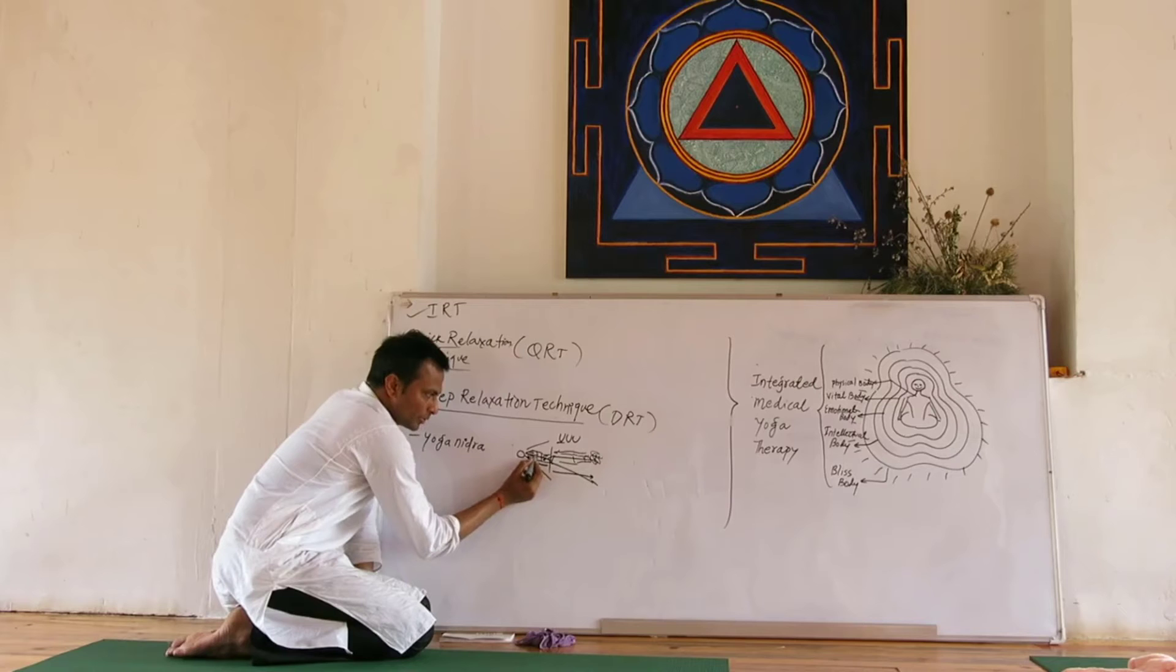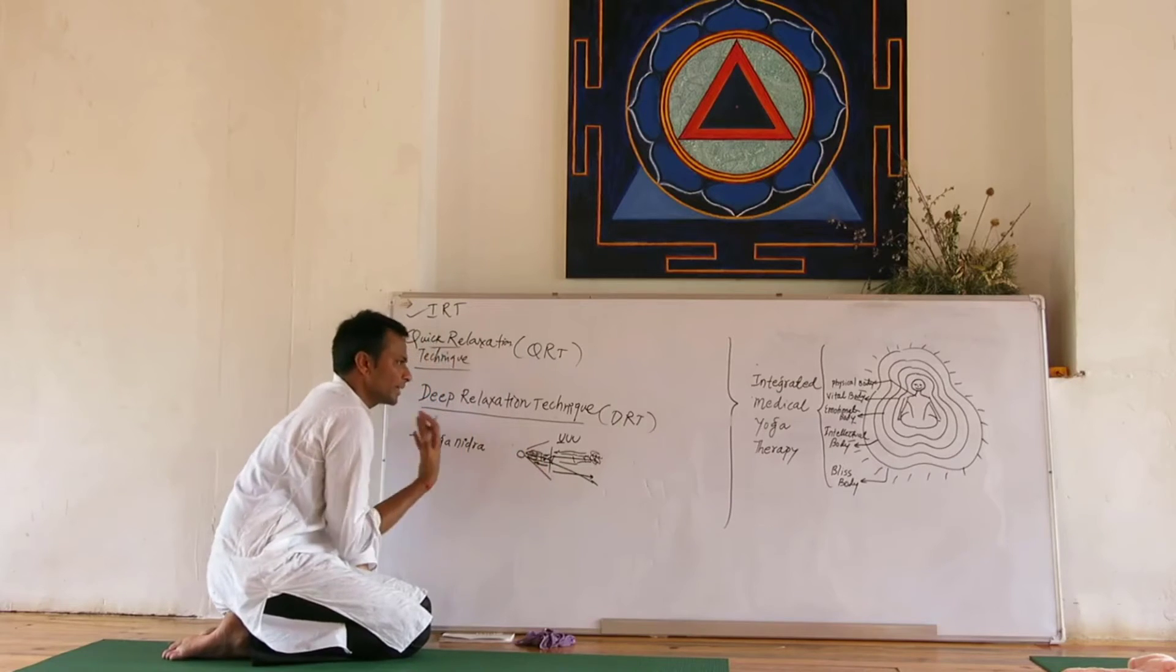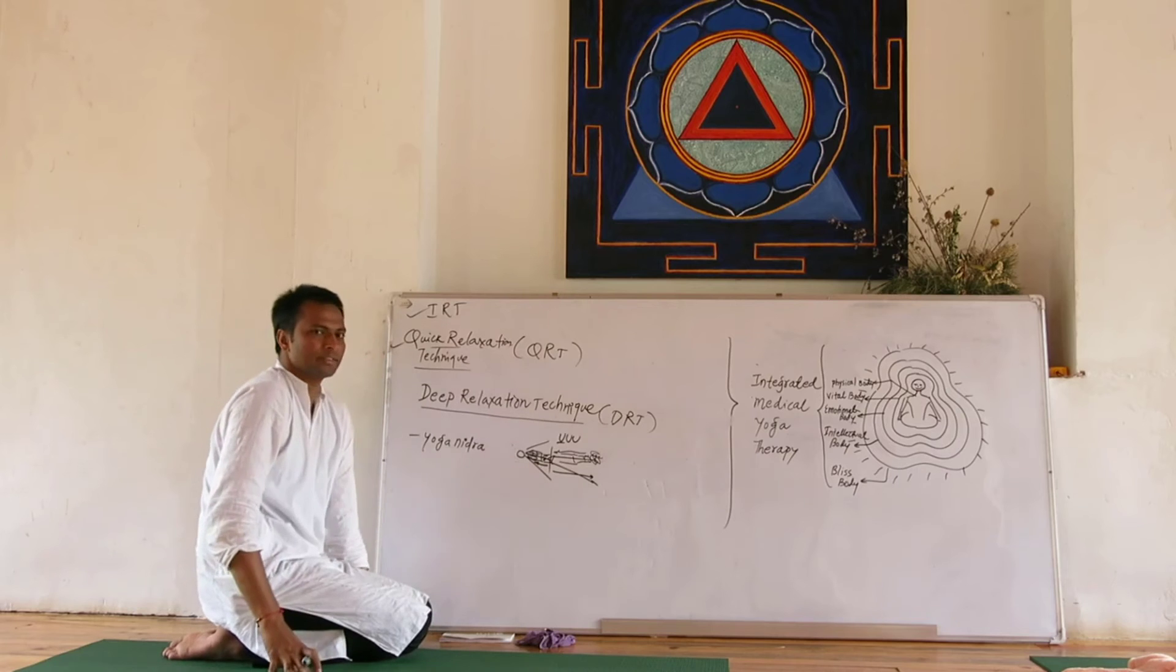Same relaxation wave is coming up towards the chest - all the heart muscles, all the lungs, chest area, chest muscles. Everything is relaxed in the chest area.